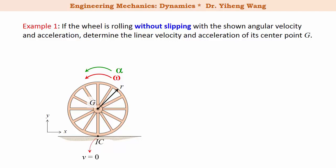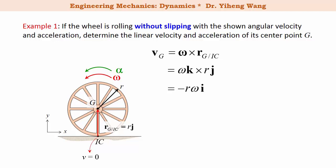Therefore the general plane motion of this wheel can now be reduced to a pure rotation about this point IC. Therefore the linear velocity of point G equals the cross product of omega and R, the relative position of G with respect to IC, which is the position vector drawn from IC to G. And according to our coordinate system, this position vector is R·î. And omega has a component in the k̂ direction, therefore V_G equals negative R·omega·î.